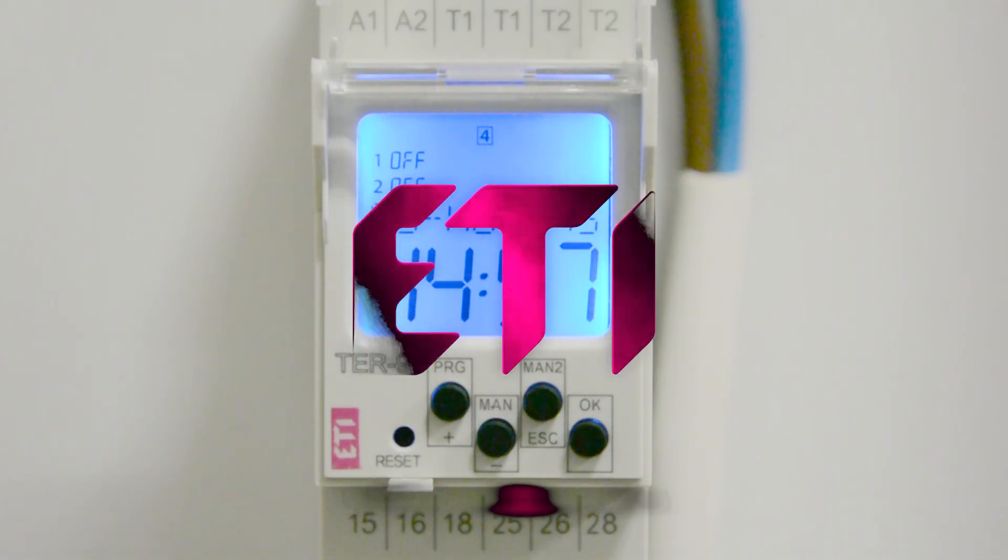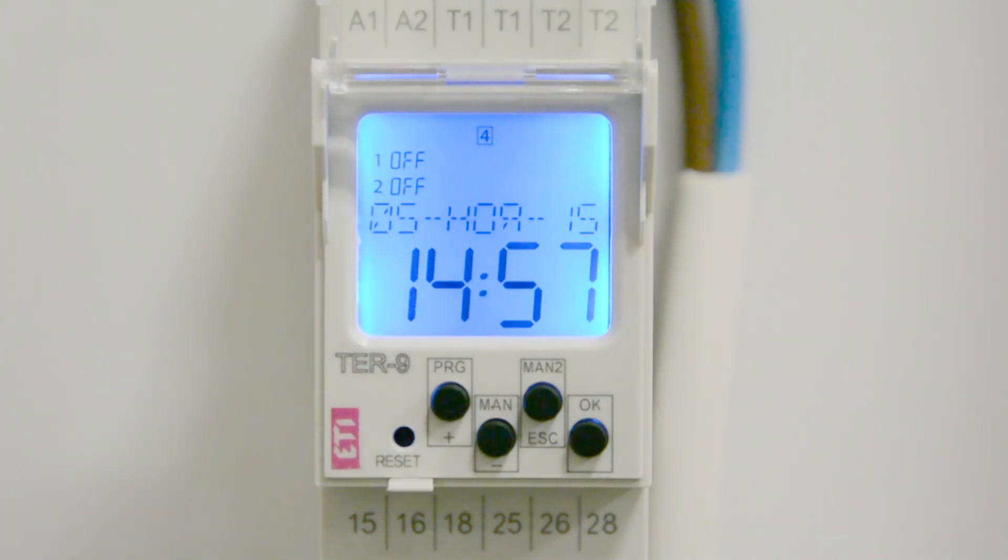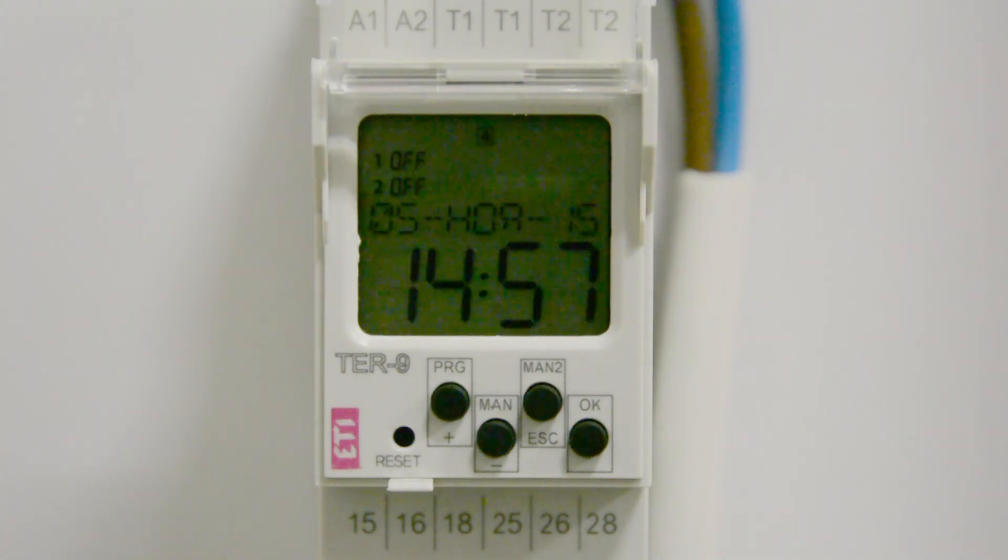Today we will take a look at the TR9 Multifunction Digital Thermostat, which is used for complex temperature control with real-time reference in the range from minus 40 to plus 110 degrees Celsius.